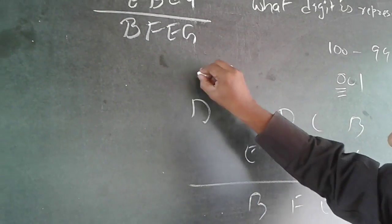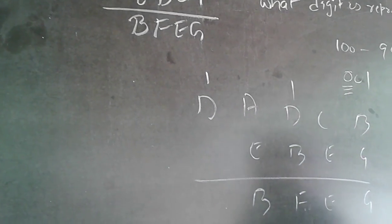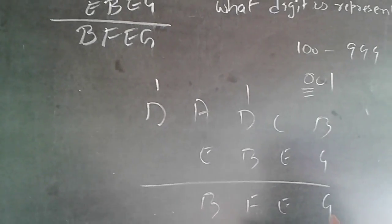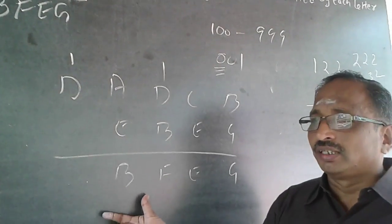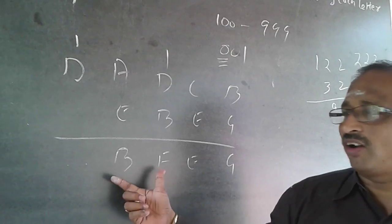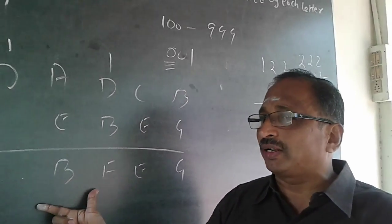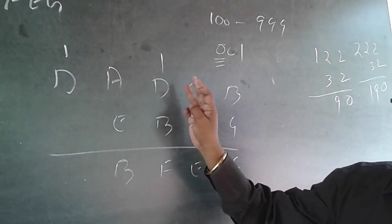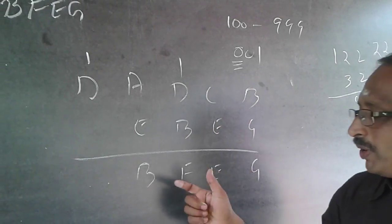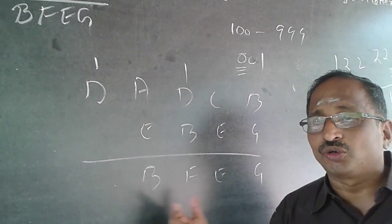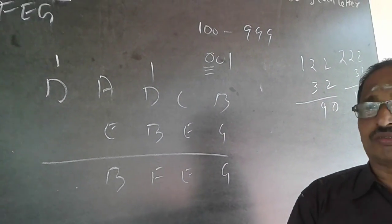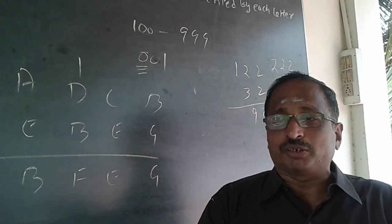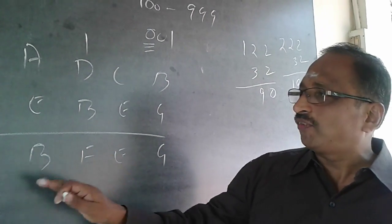So wherever I have got D, it will be 1. Now I will come to B. B being a starting number cannot be 0. Already 1 is given, so B can take only values 2 or above — it can take only values from 2 to 6. 0 is not possible, 1 is not possible.